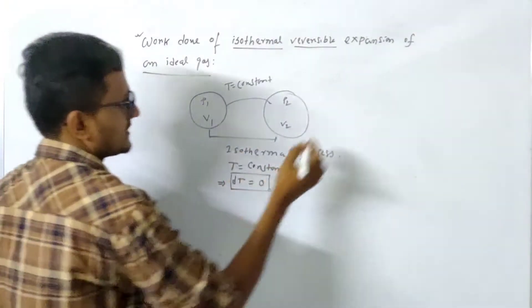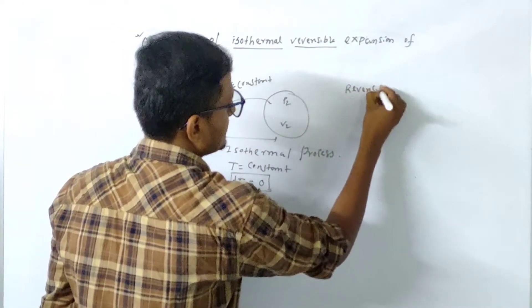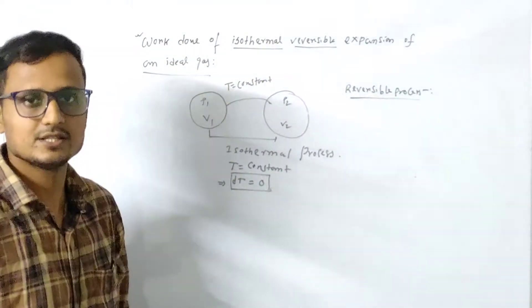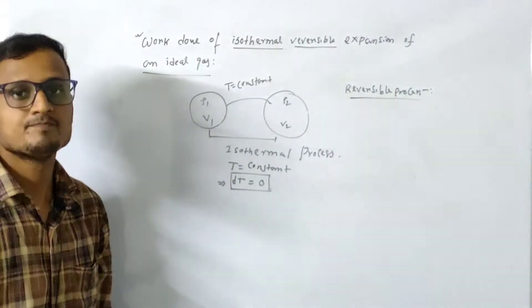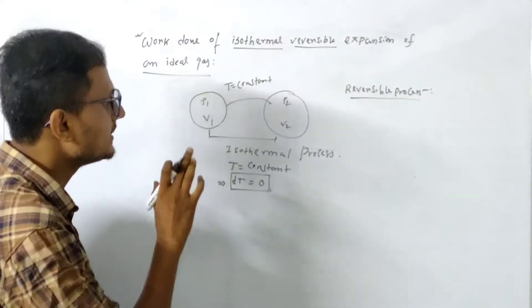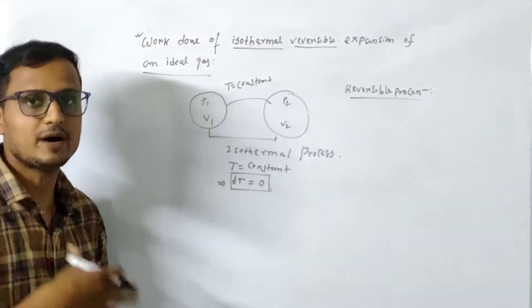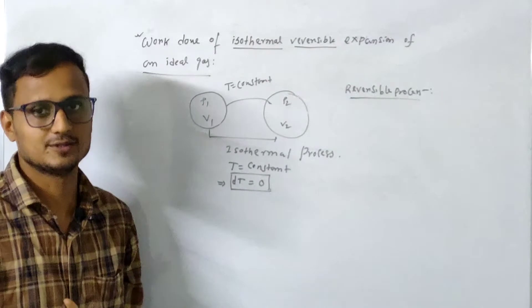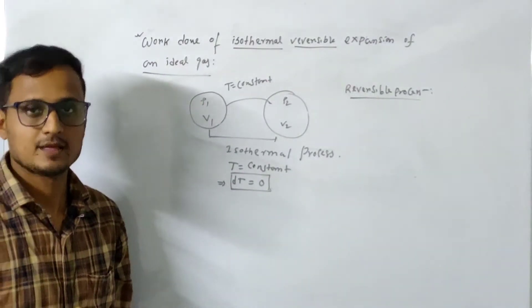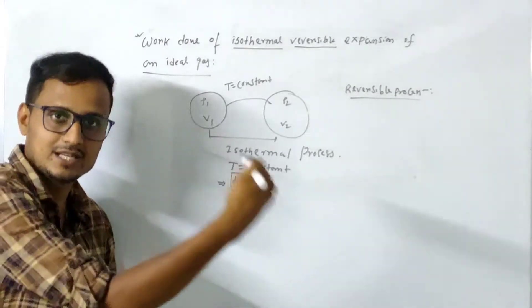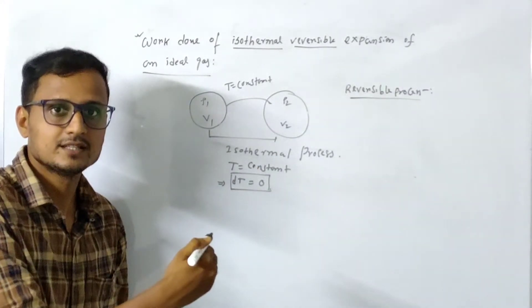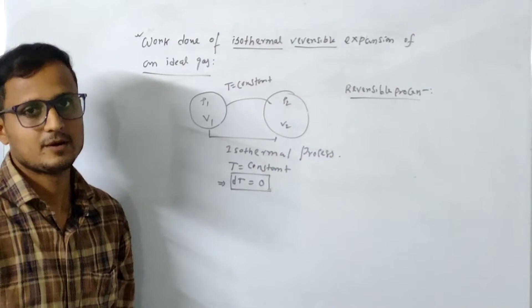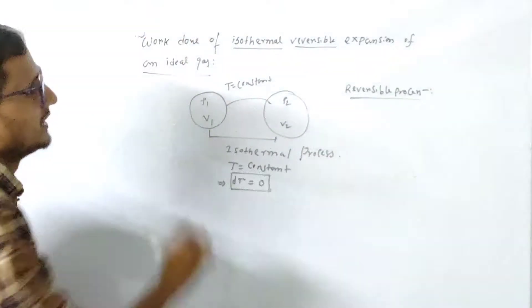Now what is reversible process? A reversible process is a process in which a system changes from initial state to final state by undergoing infinitesimal small changes. The system can also come back to the original position. That change is called a reversible change.